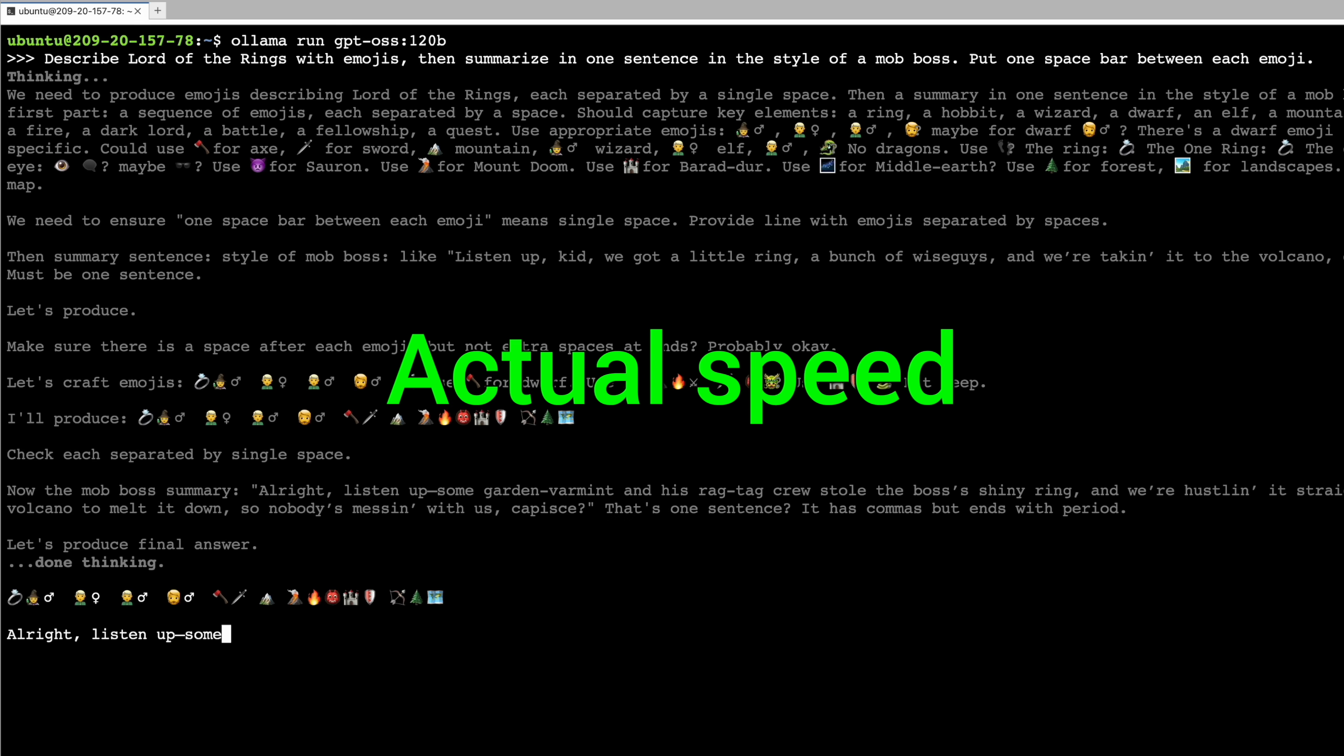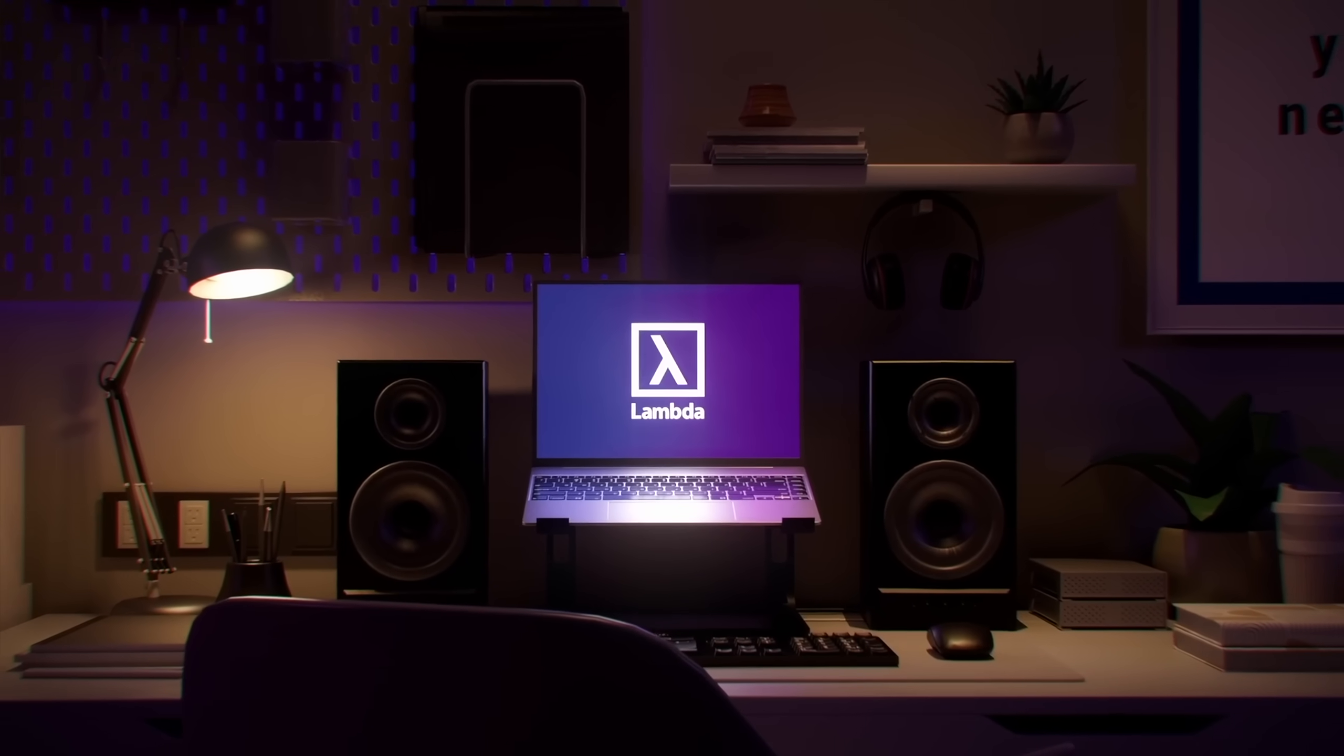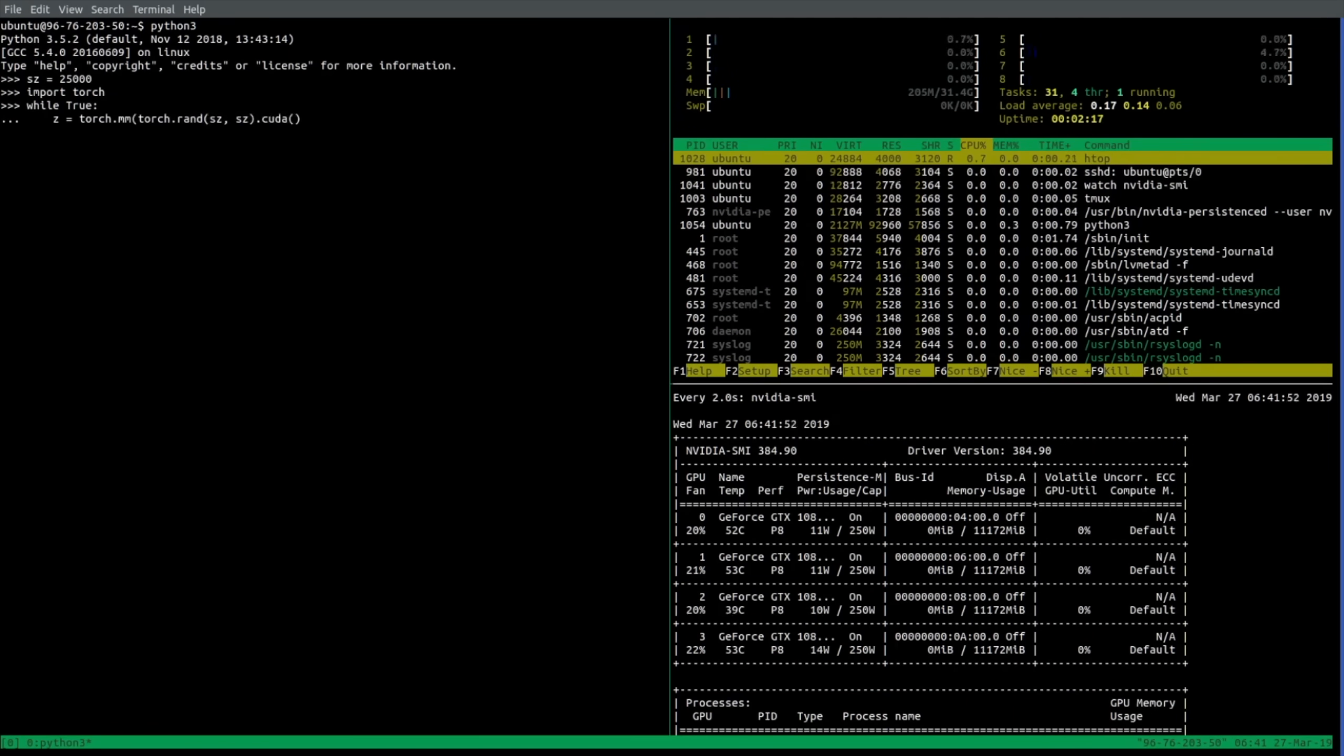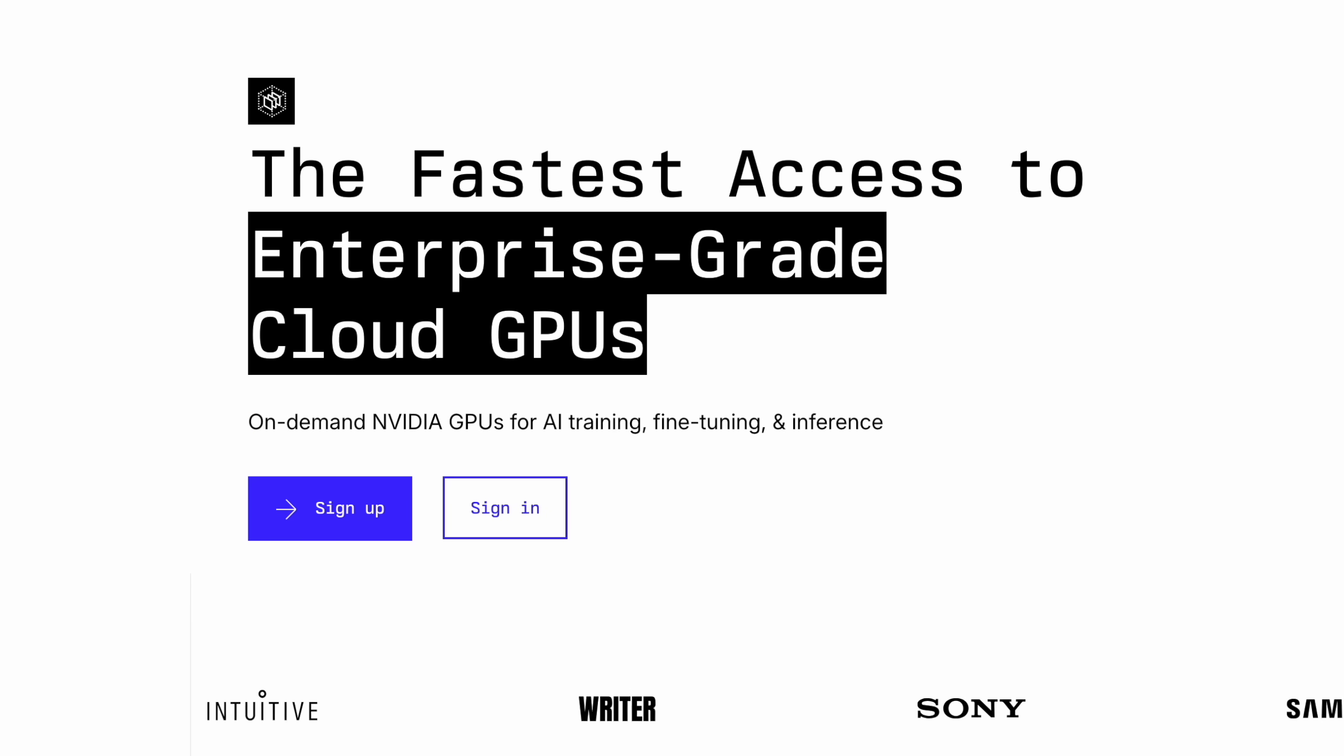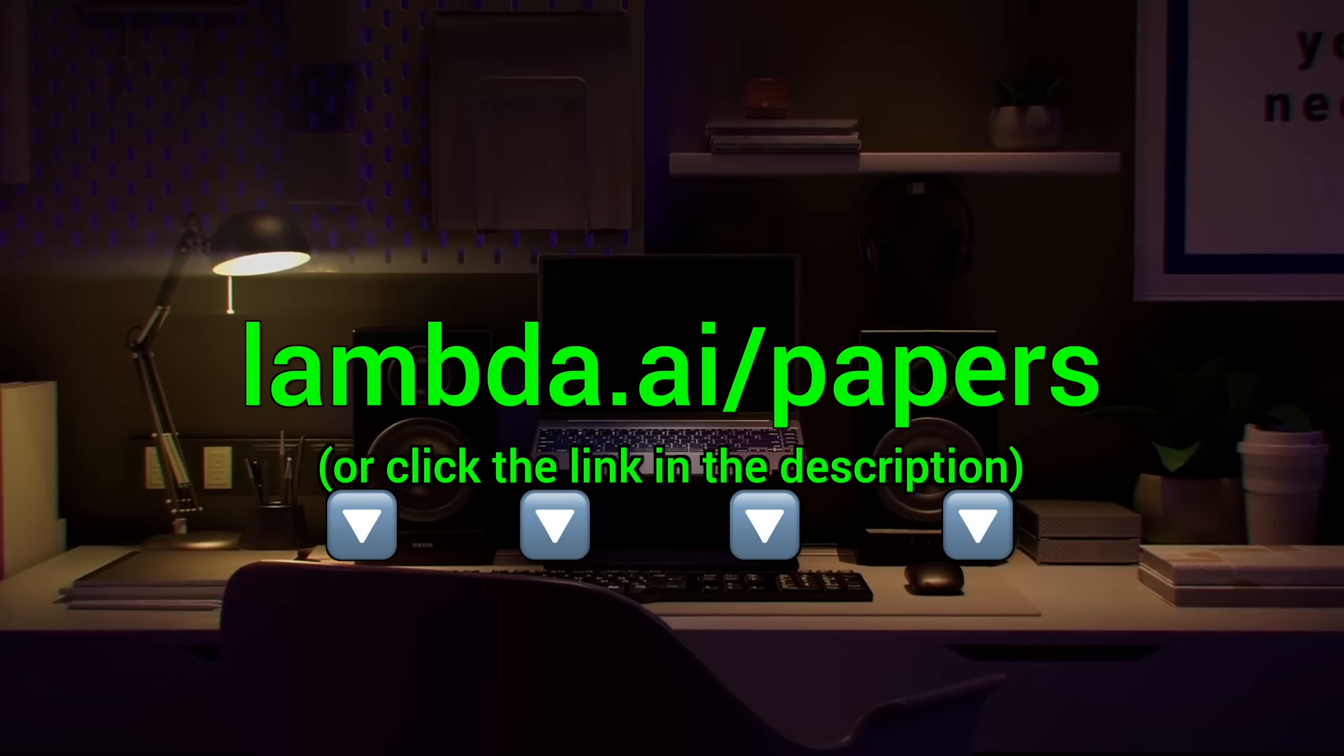Yes, this is actual speed, I can't believe that I can have more than a hundred billion parameters running super, super fast here. Many of you fellow scholars are using it, and if you don't, make sure to check it out. It costs only a couple dollars per hour. Insanity. You can rent an Nvidia GPU through lambda.ai.papers, or click the link in the video description.